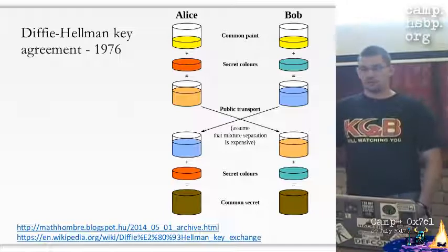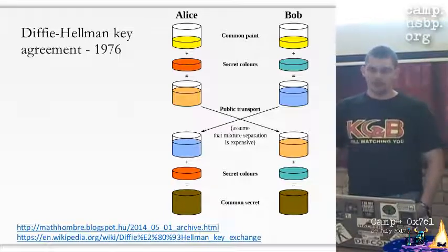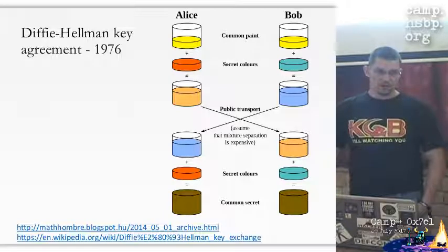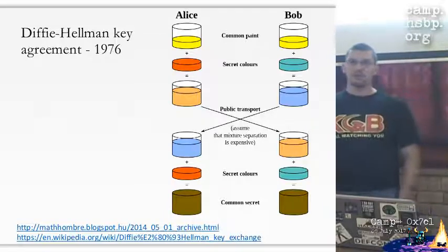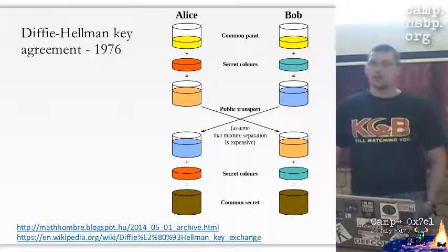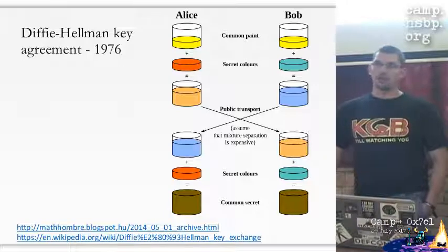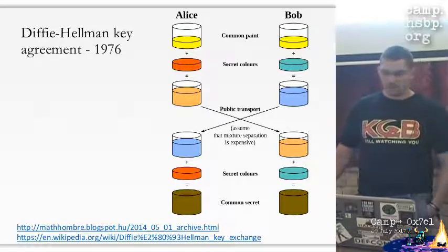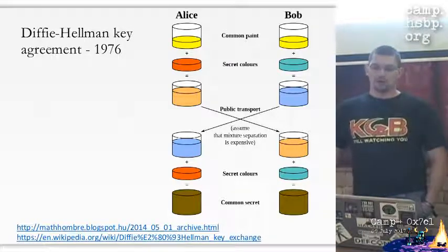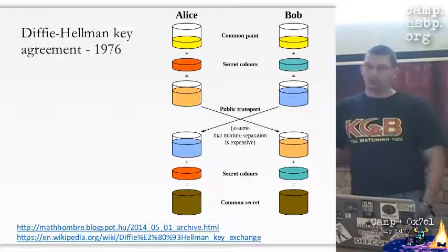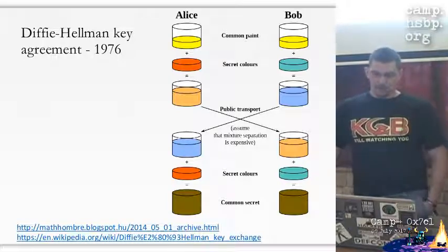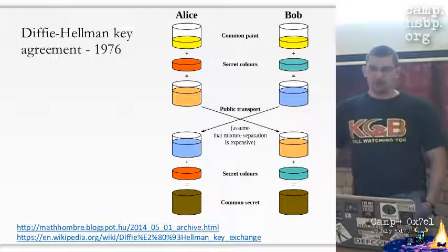Now let's talk a little bit about Diffie-Hellman key agreement. This picture is from Wikipedia and it's a very good way to explain how Diffie-Hellman works. Let's say we are working with paint colors and Alice and Bob want to agree on a secret color, but they can only transport colors in a public way.